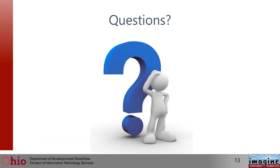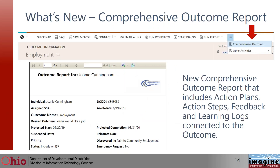Any questions on those? No questions. Those were the nice easy ones. Okay — here's a cool thing: a new comprehensive outcome report. When you go into an outcome, you can run this report on a specific outcome and it will provide information about action plans, action steps, feedback, and learning logs connected to that outcome. It's really nice — a lot of information directly related to a specific outcome.